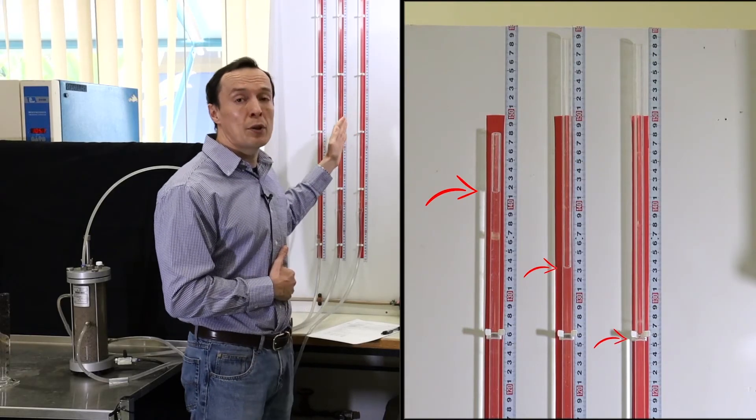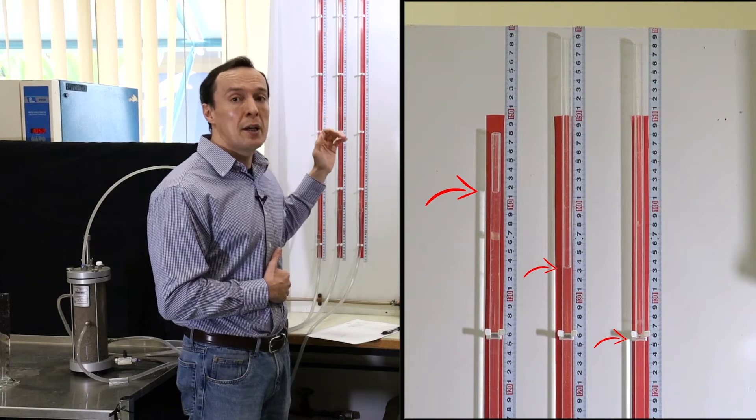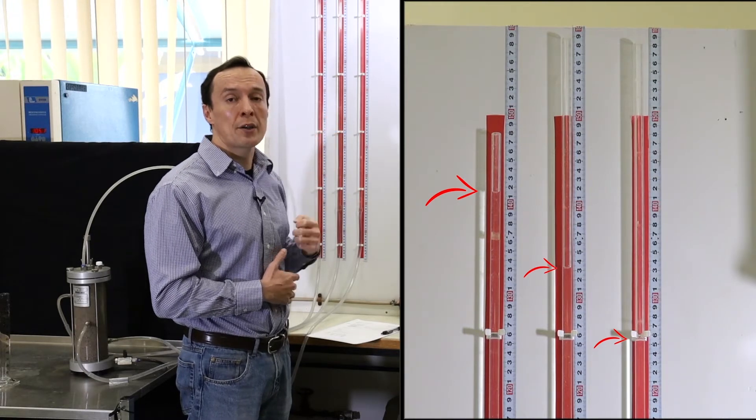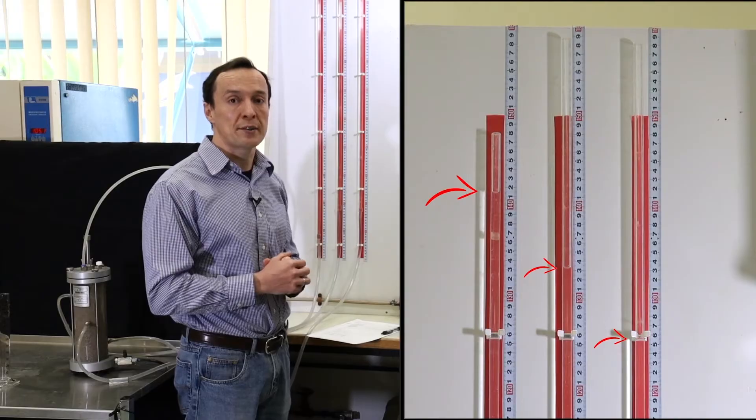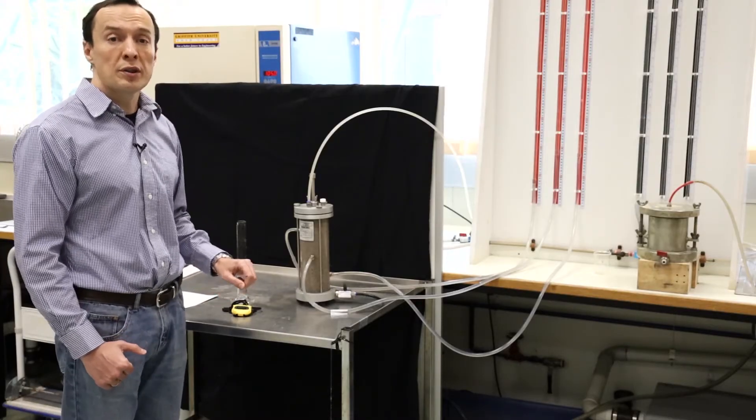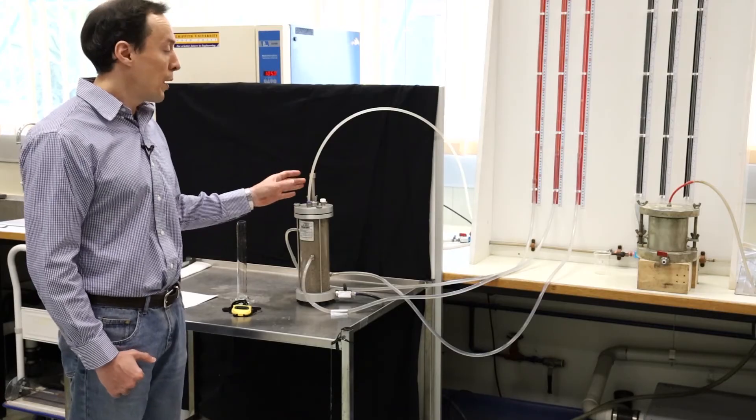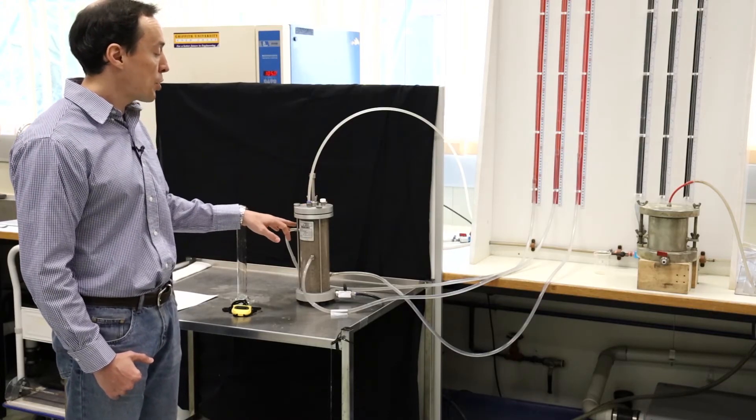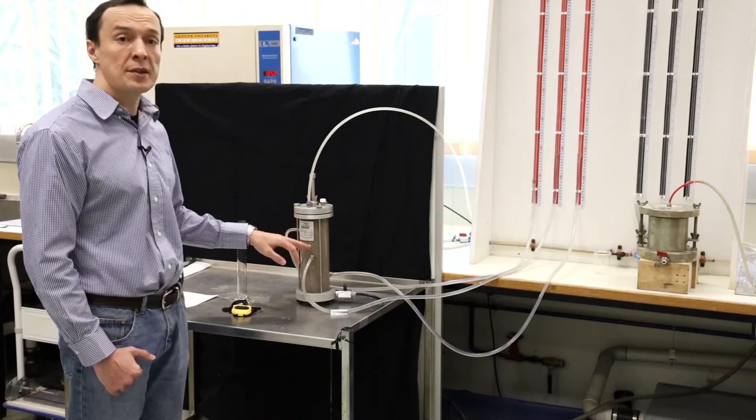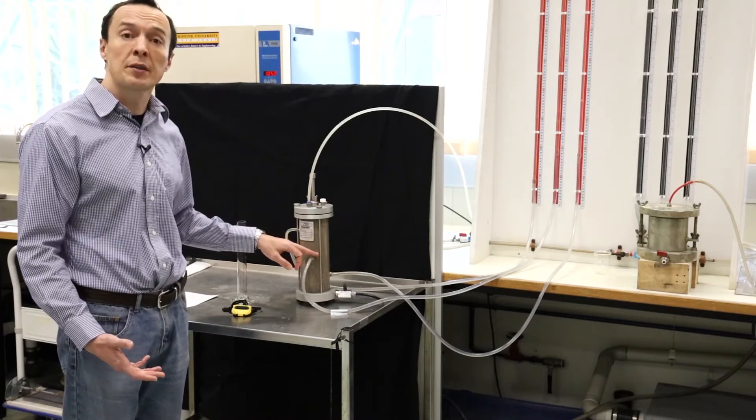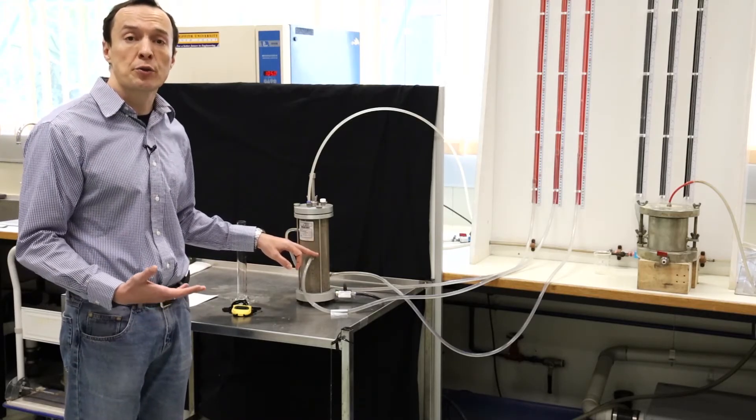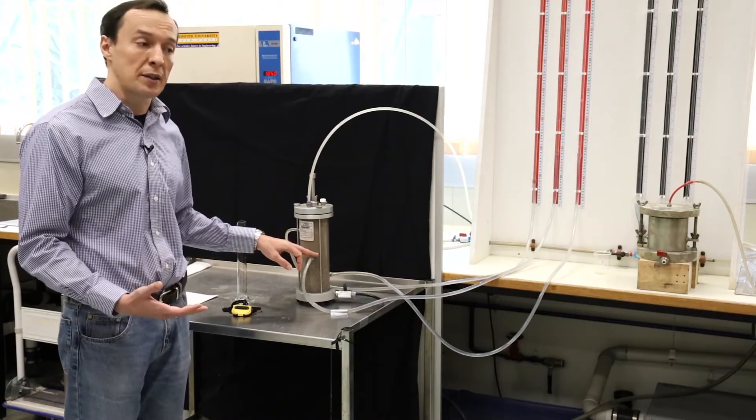So these are water levels, water heads that are now acting in the soil sample during the test. When water flows through the sample and it's under a constant flow we will see that when we measure water levels at these three manometers they will be the same, they will be constant. That's why this test is called constant head test.